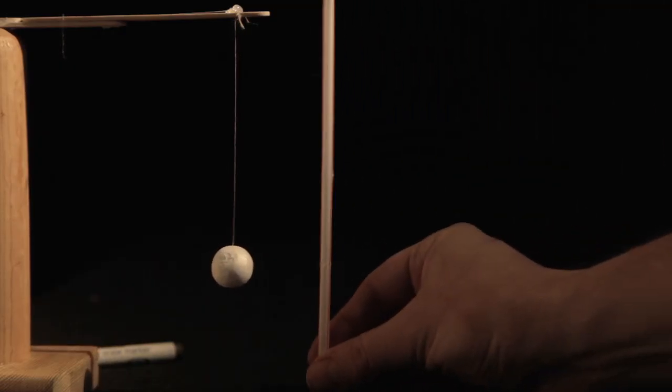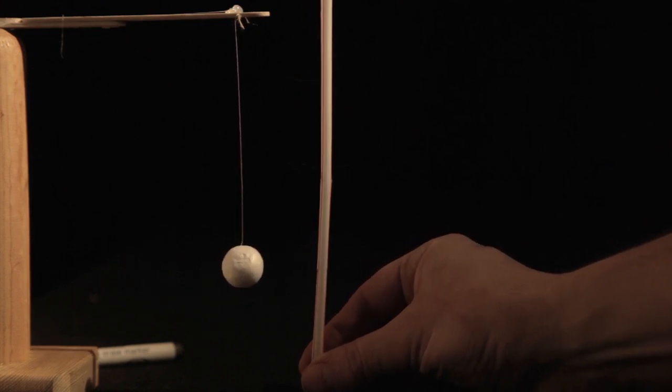And we also began trying to measure this force that Thales had encountered. One way to do this was to suspend a piece of spongy plant, called a pith ball, from a thread. And when we rubbed an insulator against fur and brought it near the pith ball, it would pull on it, causing a deflection.